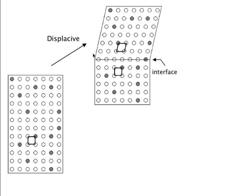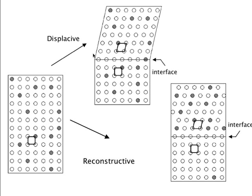That can only happen at a high temperature, and that is what we call a reconstructive mechanism of transformation, where there is sufficient flow of matter so that you do not get the displacements associated with the crystal structure change. The external shape of the crystal is maintained — it is a bit like water freezing in a container where the shape of the container does not change; you simply have a volume density change. There is no change in shape apart from the volume change, and therefore the strain energy is very limited. But you break the bonds and rearrange the atoms into a different pattern, and that is why it is called a reconstructive transformation — you are reconstructing the lattice.